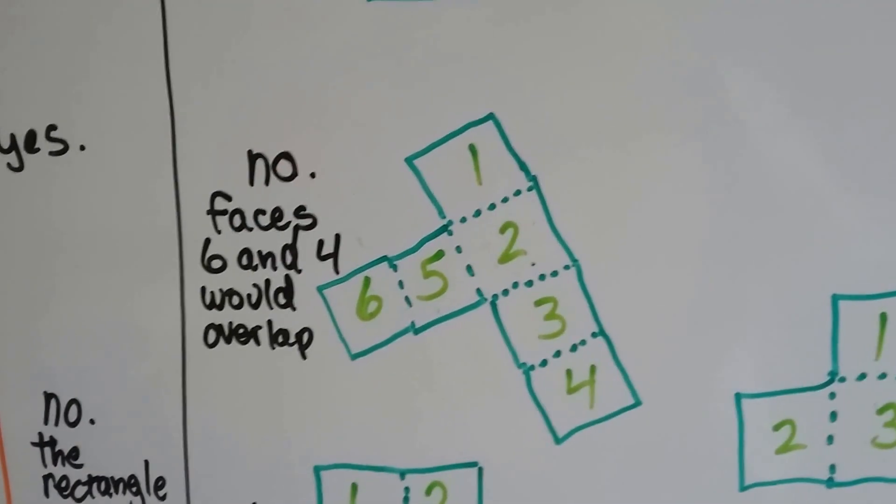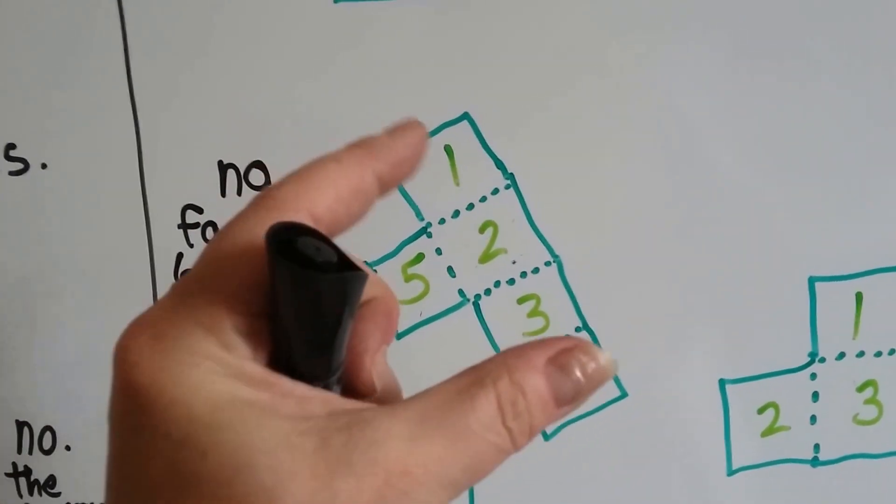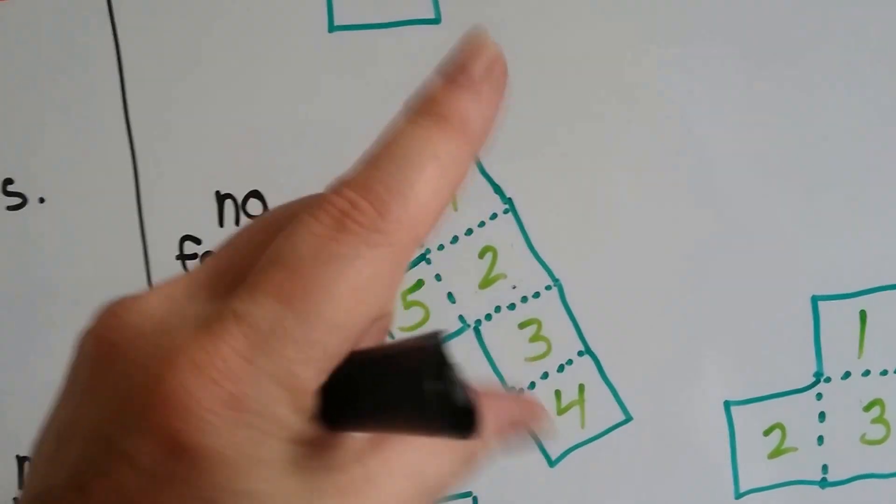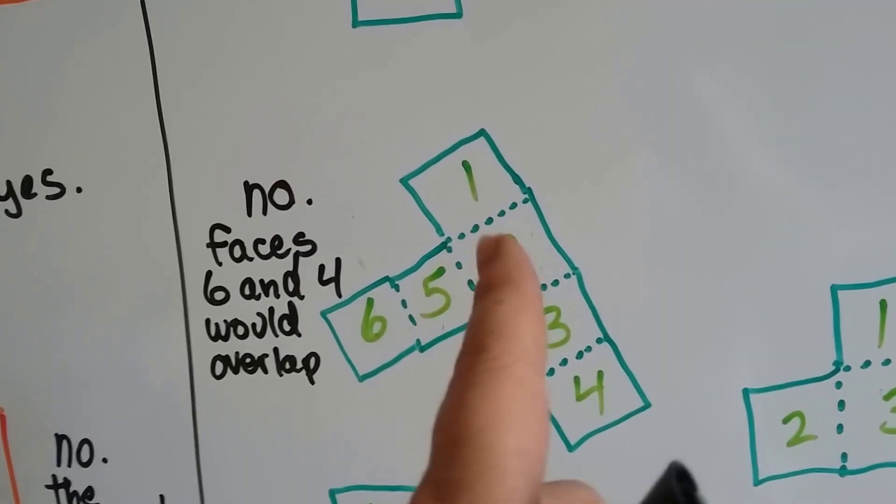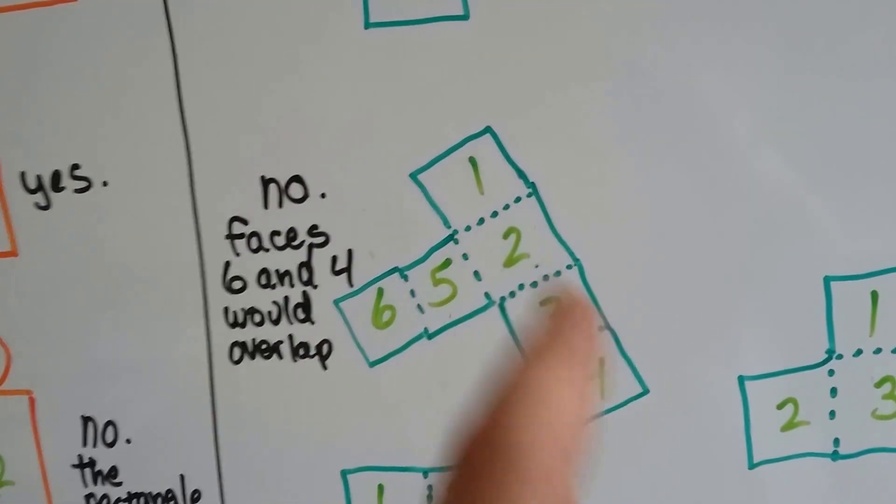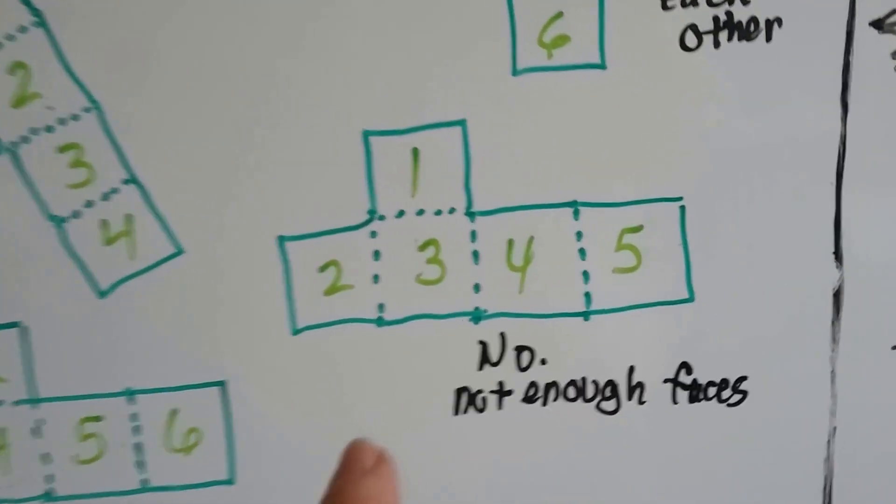How about this one? Would this work? We could fold up number one and number three. So the sides would come up. Number four would be the very top, hovering right above number two. Five could come up and be this side. But then six would be on top of four. Number six and number four would be on top of each other, overlapping. So that wouldn't work.